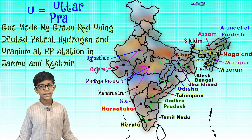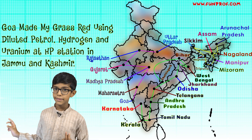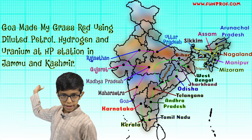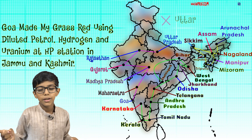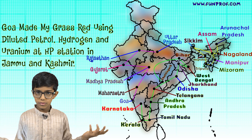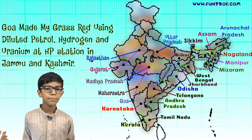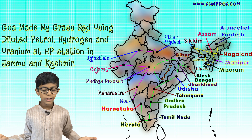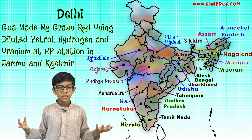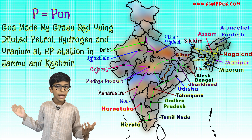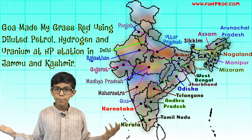U for using and U for Uttar Pradesh — but don't write Uttar Pradesh in full in the exam, just Uttar. D for diluted and D for Delhi. P for petrol and P for Punjab. So: Goa made my grass head using diluted petrol.